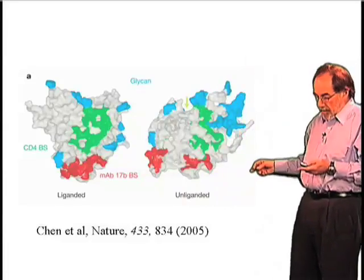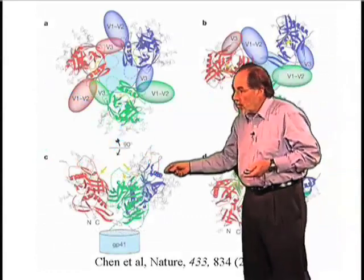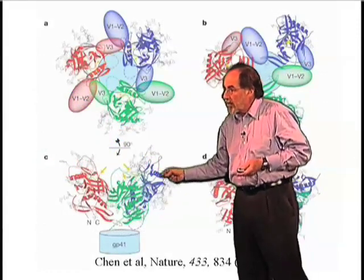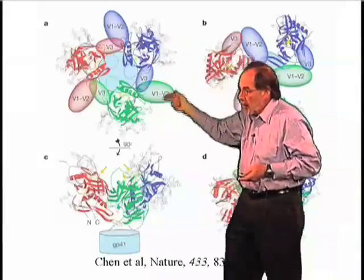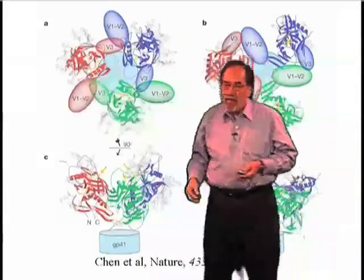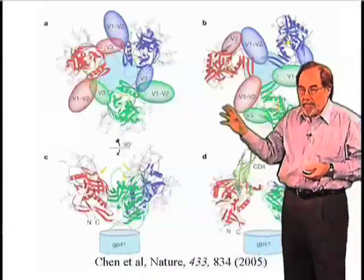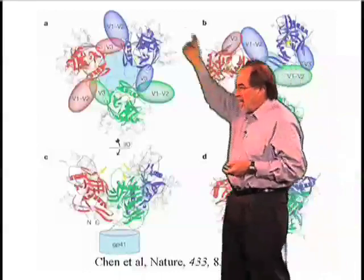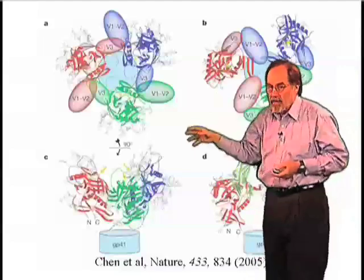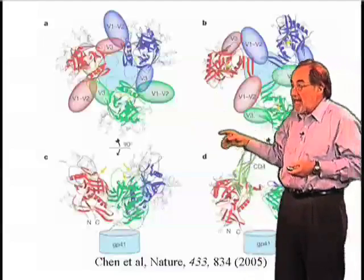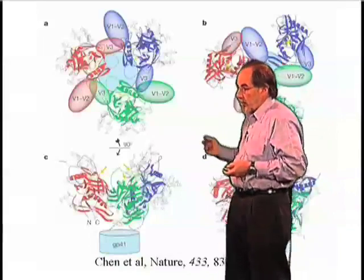There's also all of this material around the outside — looking down on the virus, you see it all around the outside. That stuff is sugar — carbohydrate — and it prevents antibodies from binding. The antibodies can't bind all around. The only place they could possibly bind would be the CD4 binding site or the CCR5 binding site, and neither one of those exists in the resting state — they're both split into pieces.